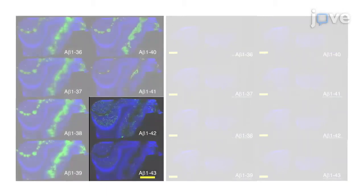By contrast, shorter amyloid betas such as amyloid beta 1 to 36 to 1 to 41 were preferentially deposited on the leptomeningeal vascular areas.